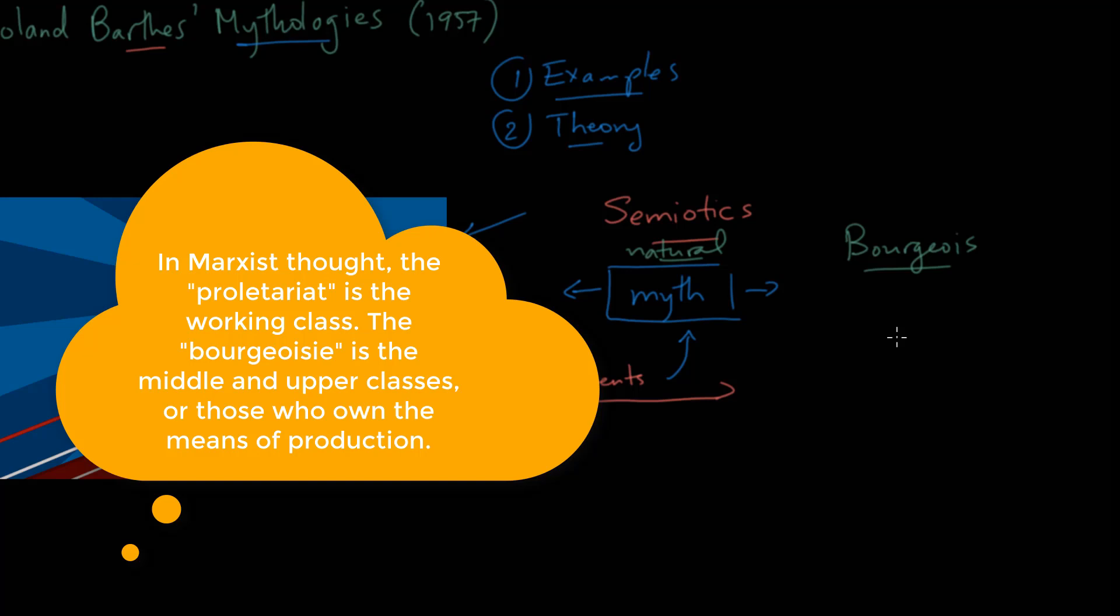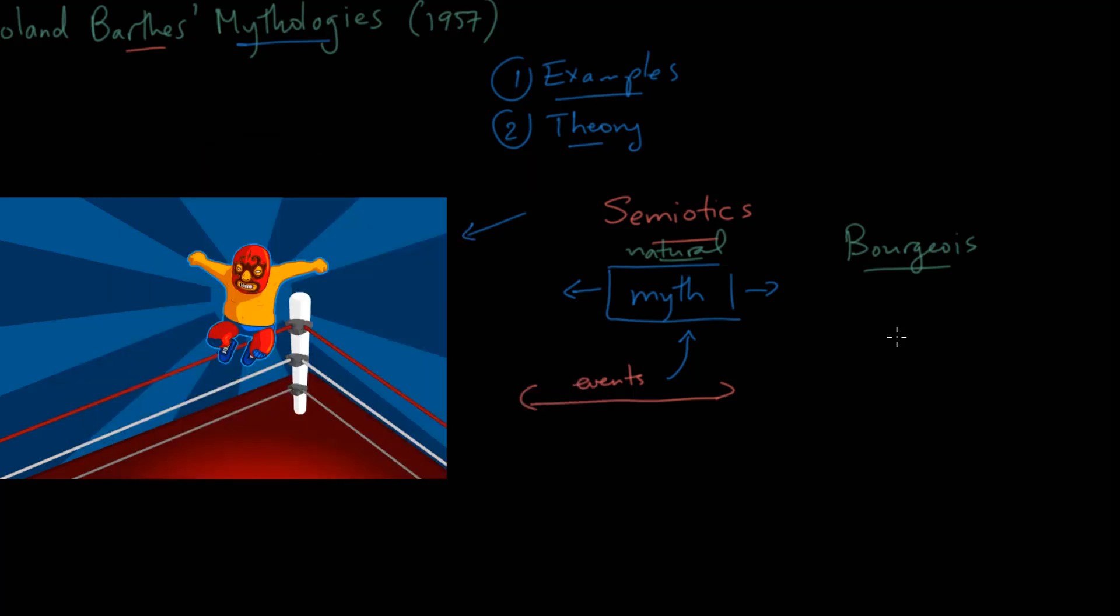And he basically says that this myth is typically read or interpreted or presented to us through a sort of bourgeois lens. So if we kind of draw some spectacles here, it's as if we are looking through the same glasses all the time, and it's the job of the critic, which in this case would be Barthes, so if we draw him over here, and he's kind of looking at all of this, it's his job to demystify the situation.